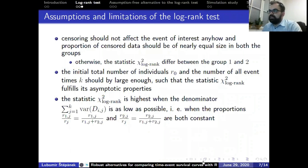The log-rank test assumes the censoring should not affect the event of interest anyhow, and the proportion of censored data should be of nearly equal size in both groups. Otherwise, the chi-squared statistics differ between group one and two. Also, the initial total number of intervals and the number of event times should be large enough, such that the chi-squared test statistic fulfills its asymptotic properties.